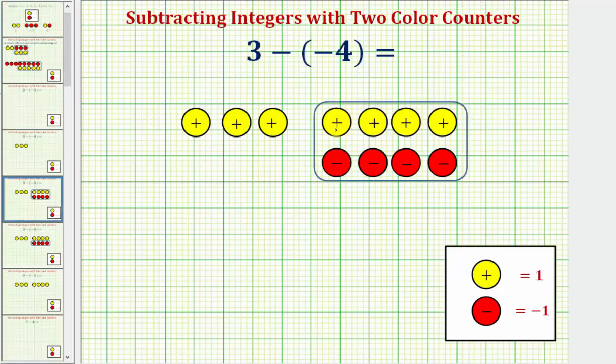Notice how if we introduce four yellow counters and four red counters, the result is zero. So we still have positive three here, but when positive three is modeled in this way...